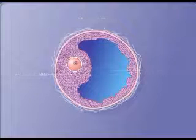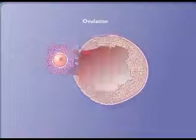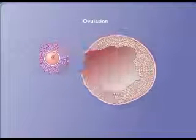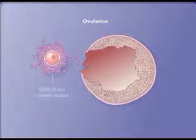During ovulation, the oocyte is released from the follicle along with some surrounding granulosa cells of the cumulus mass called the corona radiata.